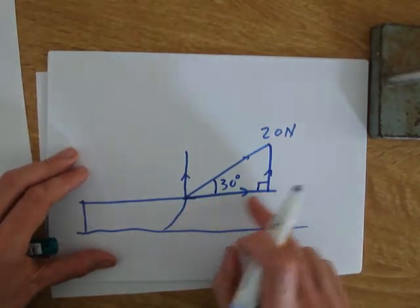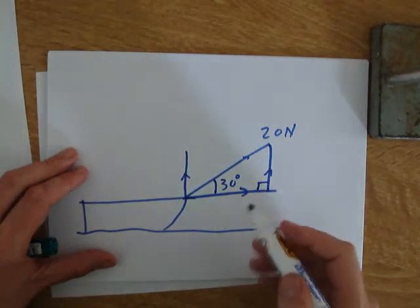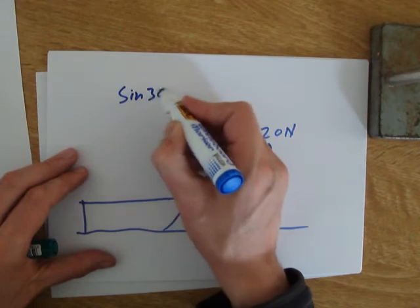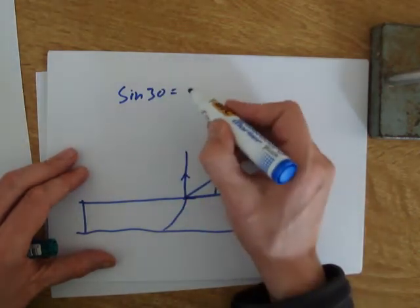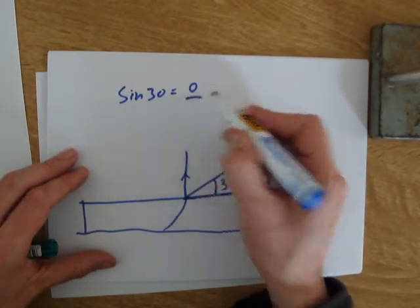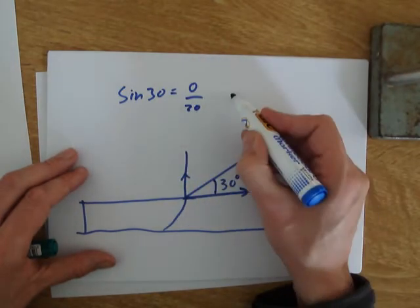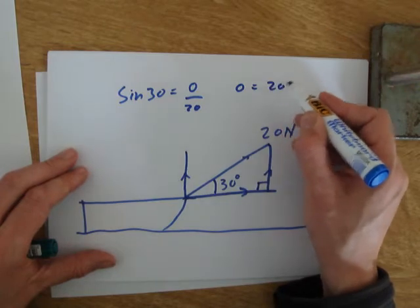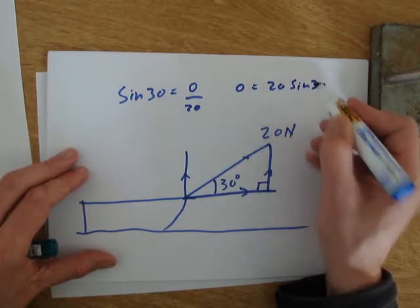Because sine 30 equals opposite, which is what we want to know, divided by the hypotenuse, which is 20, the opposite side is equal to 20 sine 30. So this side here is 20 sine 30. That's its magnitude in newtons.